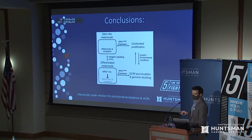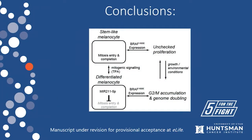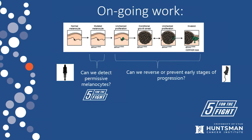Our conclusion is that in adult skin we have at least two different polar types of melanocyte transcriptomes, and depending on which transcriptome these melanocytes have, the same mutation will either induce proliferation and presumably tumorigenesis, or growth arrest. Importantly, these two states can toggle, and that toggling can happen either before or after introduction of the oncogene. Our ongoing work is to determine whether we can actually detect permissive melanocytes in adult human skin, and we're developing technologies to do so — that is where our Five for the Fight funding is continuing to go. Five for the Fight was also funding early in vivo work to determine whether we could reverse or prevent melanomagenesis using this knowledge, which has recently been funded by the NCI. Huge thanks to Andrew McNeil and Rachel Belote who conducted most of this work, and again to Five for the Fight and Huntsman Cancer Institute.